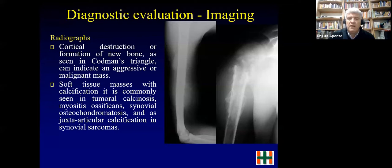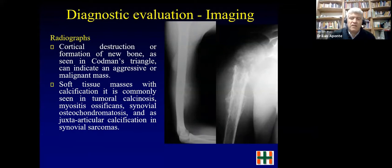Some benign tumors like myositis ossificans, osteochondromatosis, or synovial chondromatosis can also have calcification, but in soft tissue sarcomas, if you see calcification you must think of synovial sarcoma. If there is calcification, you must stop and consider performing a biopsy.